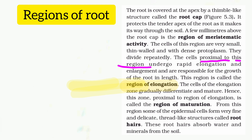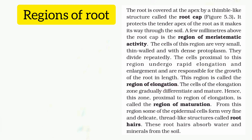The elongation zone follows the meristematic zone. Cells from the meristematic zone move into the elongation zone, where they become elongated and larger in size, contributing to root growth. This is followed by the maturation zone.